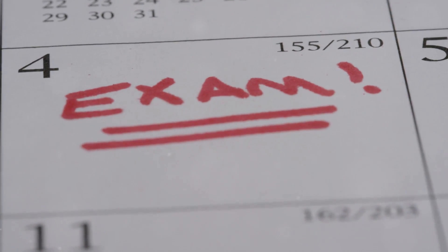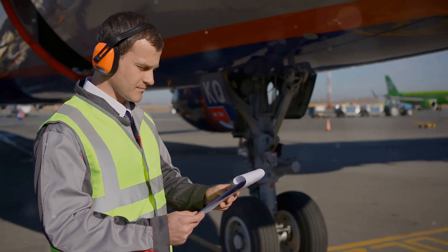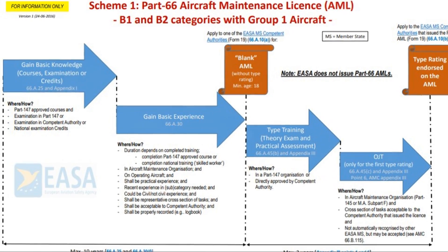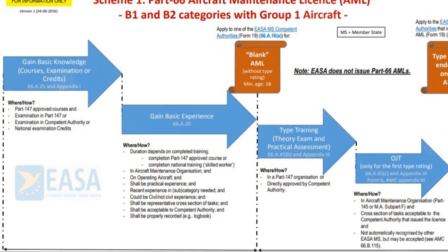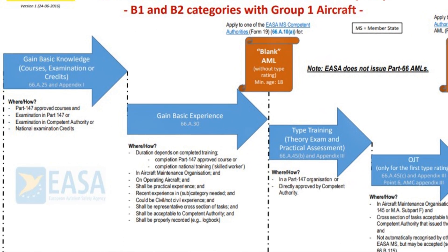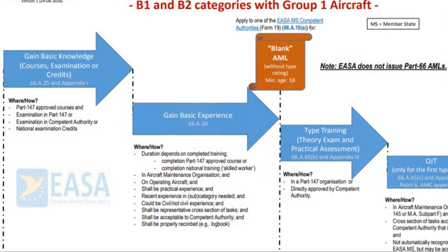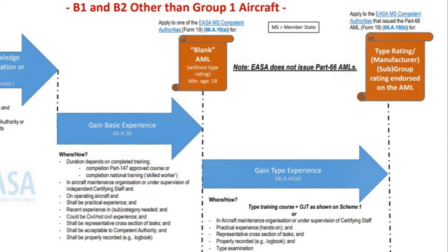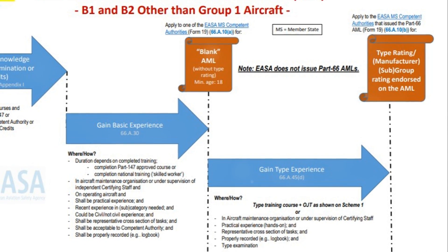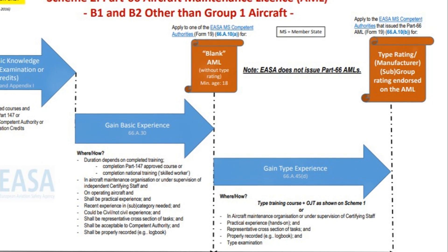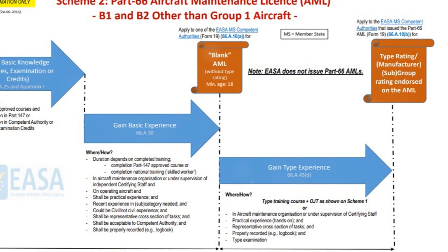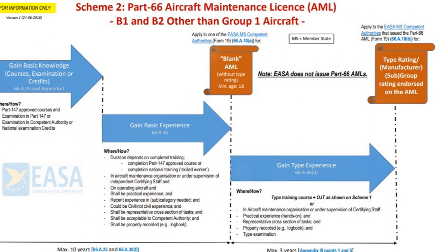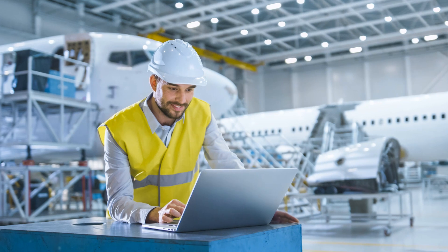Now let's talk about the exams and assessments. You'll need to pass a series of modular examinations covering a wide range of topics such as aviation legislation, aircraft aerodynamics, structures and systems, propulsion, and avionics. The specific modules required will vary depending on whether you're going for a B1 or B2 license. In addition to theoretical exams, you must also demonstrate practical competence through assessments, performing maintenance tasks under supervision to ensure you have the necessary skills.